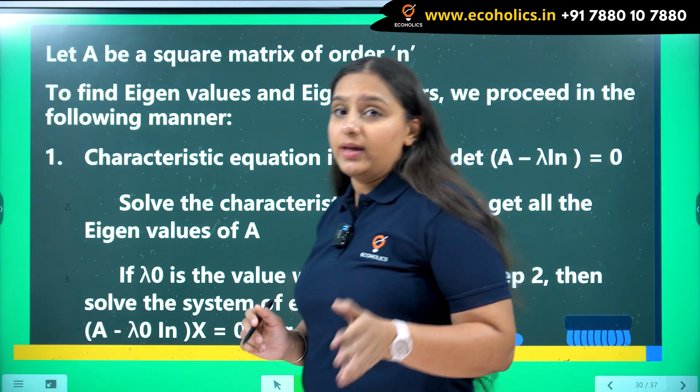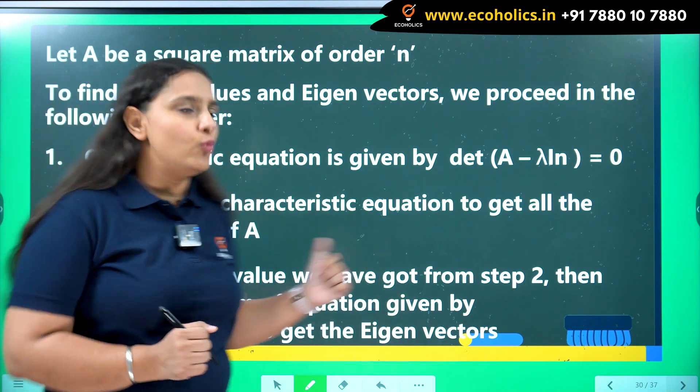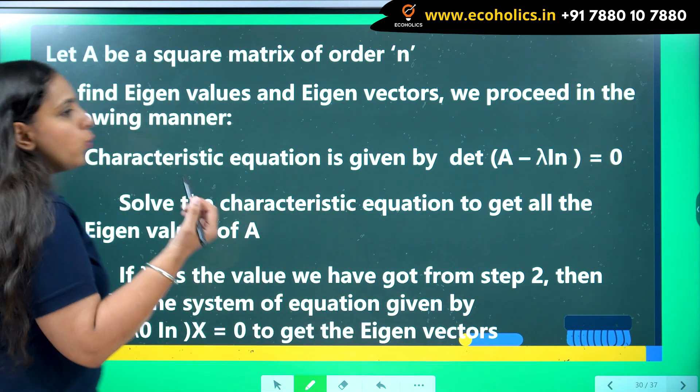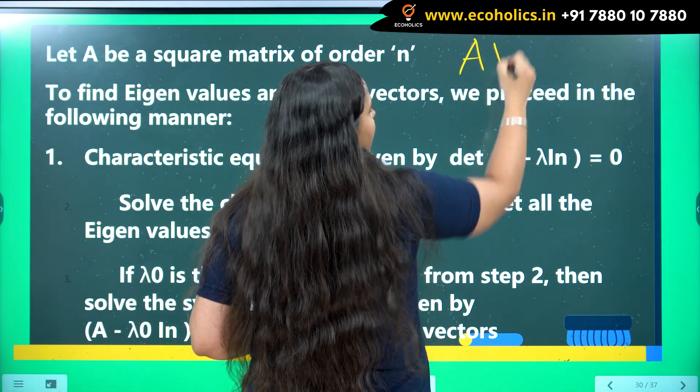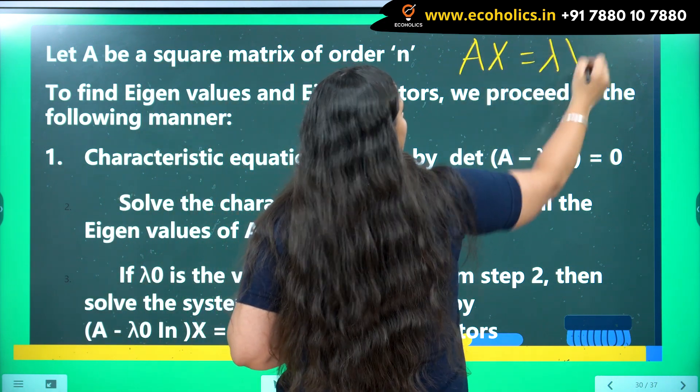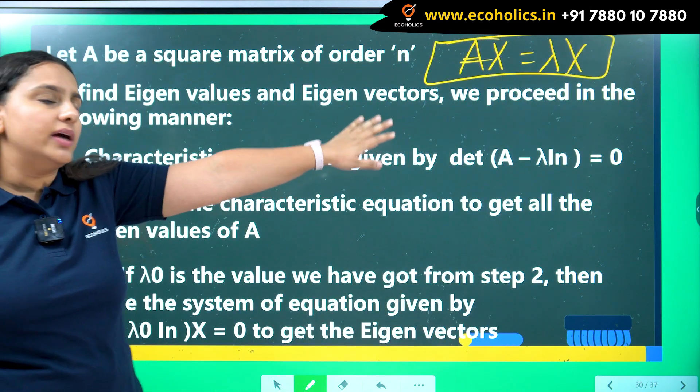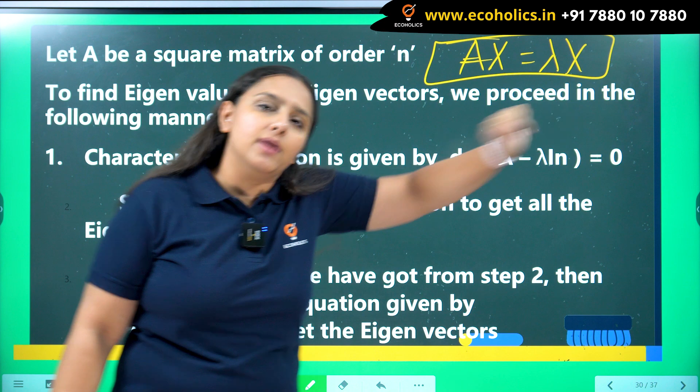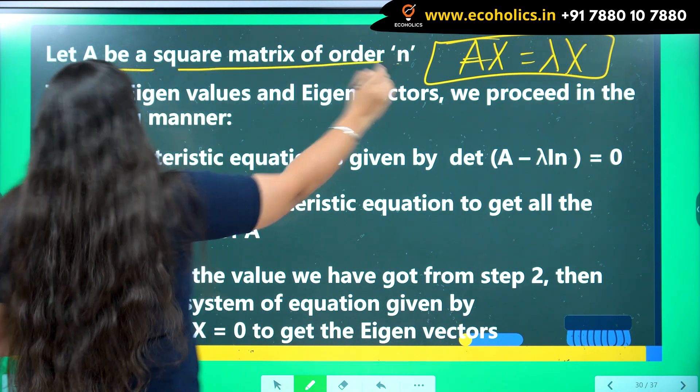If you haven't watched that video yet, please go and watch it and then come here and continue watching this. When we were talking about eigenvector and eigenvalue, we know Ax has to be equal to lambda x where A is my given matrix, x is my eigenvector and lambda is my eigenvalue. Again, A is a square matrix of order n.